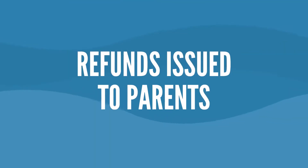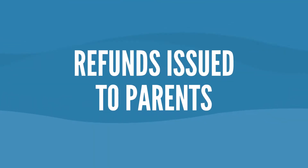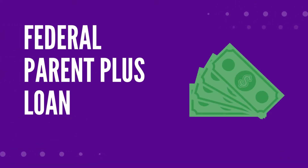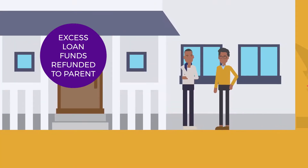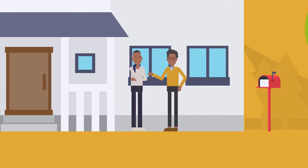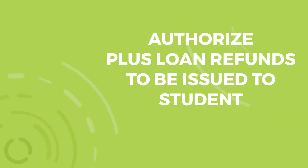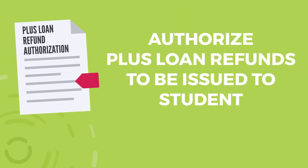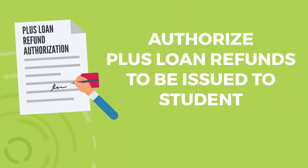In some instances, a refund will be issued to the parent of an undergraduate student. This happens when a student and their parent have taken out a federal PLUS loan. In this case, any excess funds must be directly refunded to the parent. Refunds issued to parents are only sent by check via the mail. Parents can complete a PLUS loan refund authorization form if they wish to allow refunds caused by excess parent PLUS loan funds to be issued to their student.